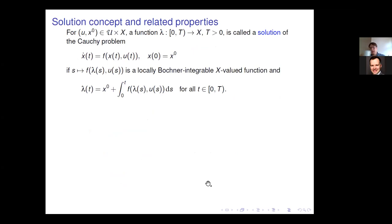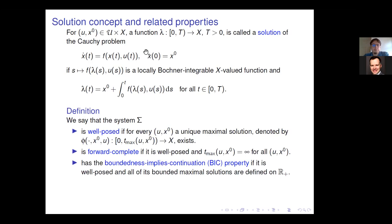To handle this ODE we need a solution concept. For a pair (u, x_0) of input function and initial state, a function lambda on an interval with values in X is called a solution of the Cauchy problem if it is locally Bochner integrable with values in X and satisfies the integral equation associated to our differential equation. We don't talk about derivatives directly, just integrals, and there is a well-established theory handling such solutions.